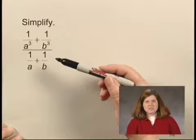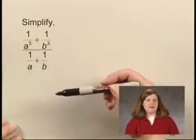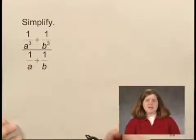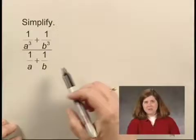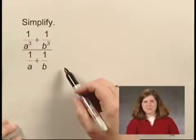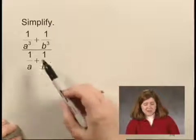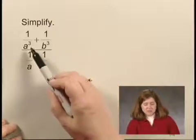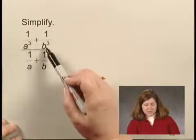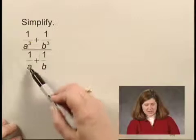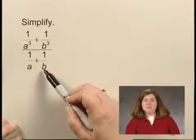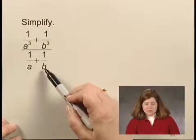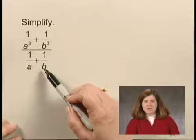We can simplify this by multiplying using the LCM, or Least Common Multiple, of all the denominators that appear within the complex rational expression. The denominators that appear within the expression are a-cubed, b-cubed, a, and b. The Least Common Multiple of all those is a-cubed b-cubed.